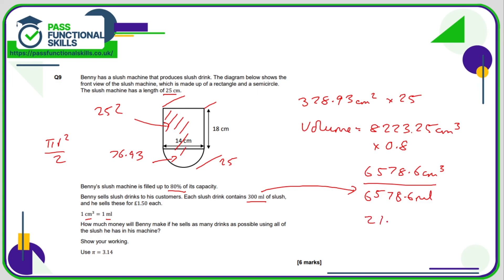So how many 300 milliliters are there in 6578.6? The calculation is 6578.6 divided by 300, and that is 21.92 drinks that you can sell. Now obviously you can't serve 0.92 of a drink, so we'll have to round that down to 21 drinks. And if each drink is one pound 50, our final calculation is 21 times by one pound 50. And 21 times one pound 50 comes to a grand total of 31 pounds and 50p. That's quite a tough question, and as you can see, there's loads of calculations going on there. So well done if you got that answer correct.